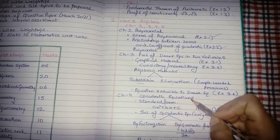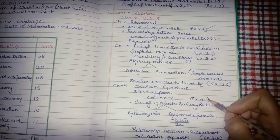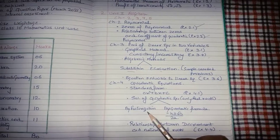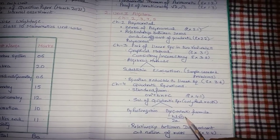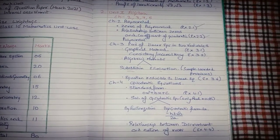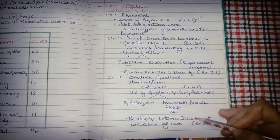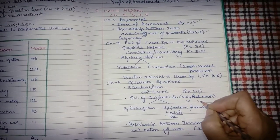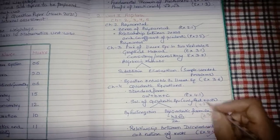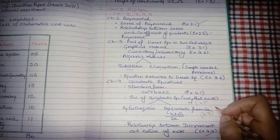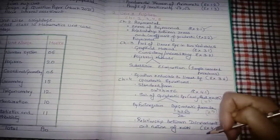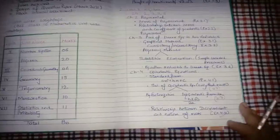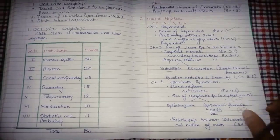Chapter 4 is Quadratic Equations. First prepare the standard form (exercise 4.1). From the three solving methods, one has been deducted: prepare only factorization method and the quadratic formula. By completing the square has been cut - do not prepare it. Also prepare the relation between discriminant and nature of roots (exercise 4.4). Do exercise 4.3 completely except the completing the square method. Similarly, Chapter 3 is complete except cross multiplication, and Chapter 4 is complete except completing the square.